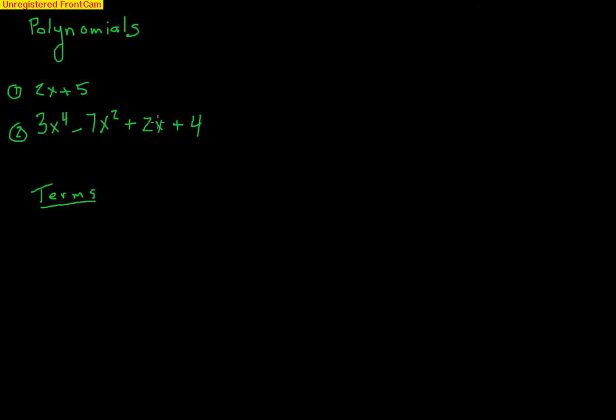Binomial is what we call something that has two terms. This next example right here, number 2, there's no like terms. So we have 1, 2, 3, 4 terms. And with 4 terms, we just call it a 4-term polynomial.